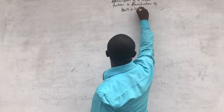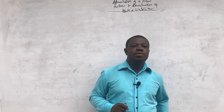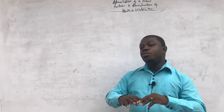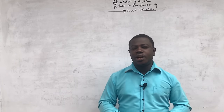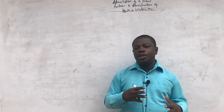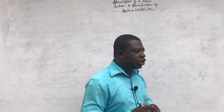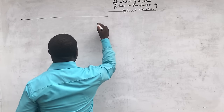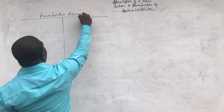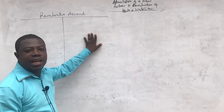What I want us to do now is to understand how to prepare the revaluation account. Once we understand that, we can take a practical question and solve it together, because the capital accounts and the statements of financial position we've already gone through in previous videos. The revaluation account works like a profit and loss account — the debit side is for expenses and the credit side is for incomes.